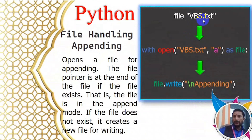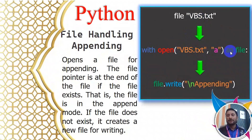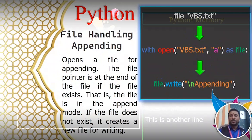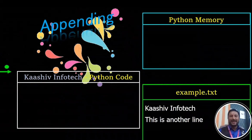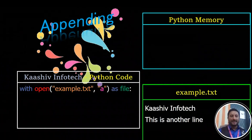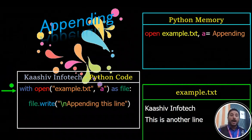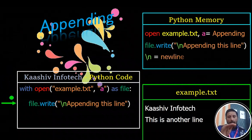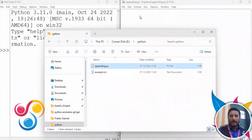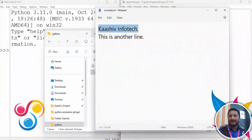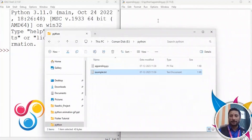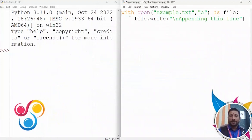If you want to append a line, you can add a line using append mode. There is a Python file and a text file. Let's see what we are doing — we open the example text file and use append mode. We write 'appending this line' using file.write().